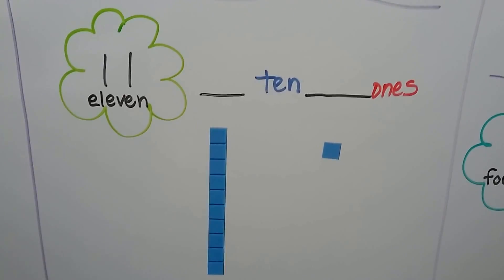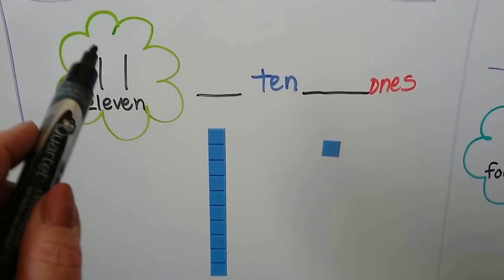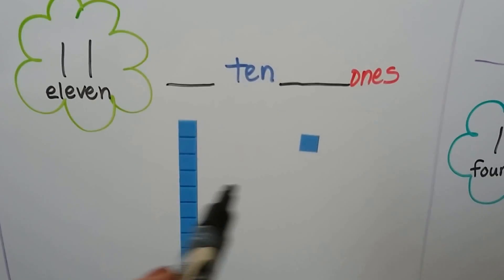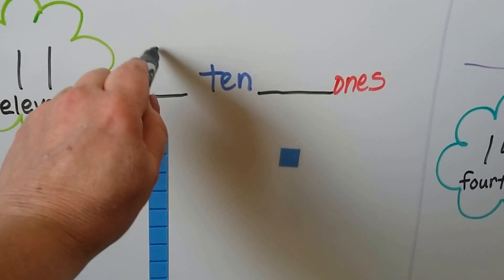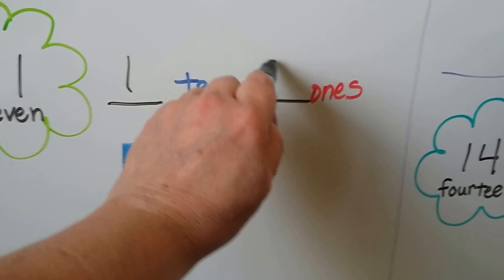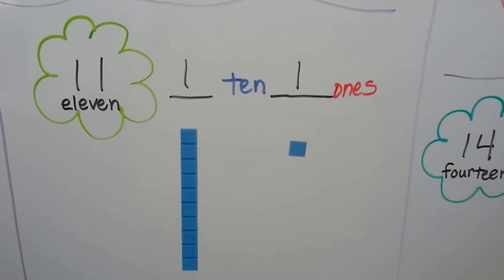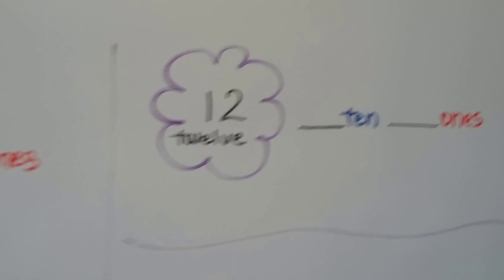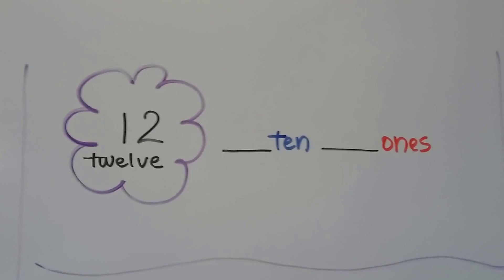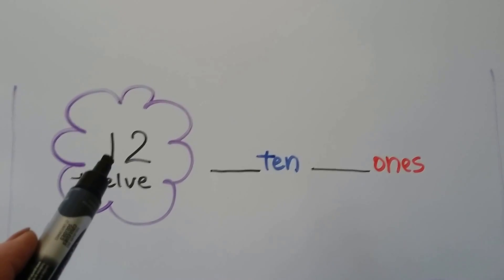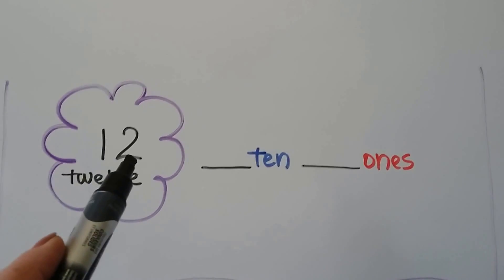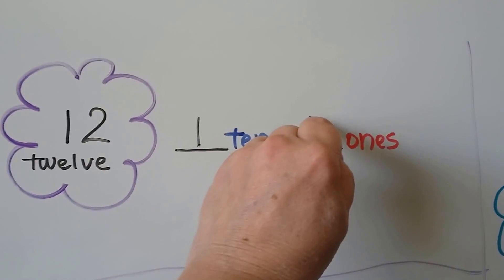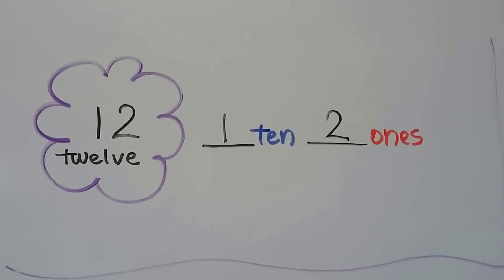Eleven — we have one ten and one one. Twelve — we have one ten and two ones. One ten and two ones makes twelve.